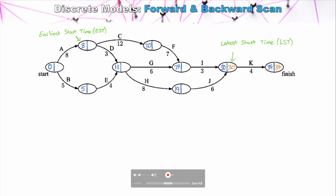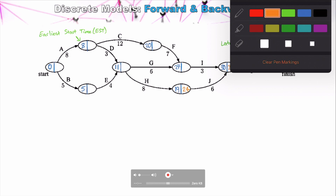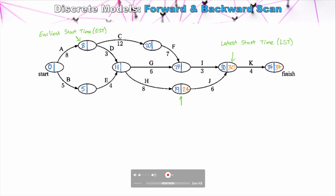As we work backwards, there are important things to be aware of. For Task J: we can start it as early as 19 units, but we need to complete it by 30 units to not delay the project. Task J takes six units, so we need to start it no later than 24 units. This means Tasks J and H have slack time — we could delay these tasks by a total of five units without delaying the entire project. Task J clearly has five units of slack time with no overall effect on the earliest project finishing time.